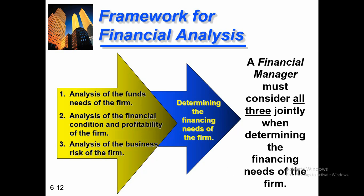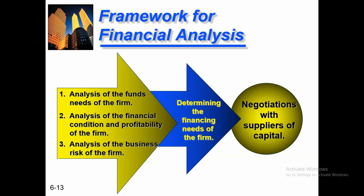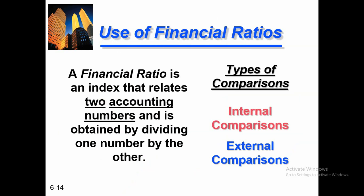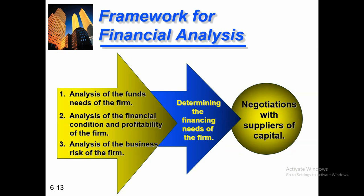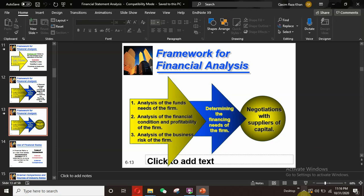Determining the financing needs of the firm: a financial manager must consider all three analyses jointly when determining the financing needs of the firm. Top management needs to consider all these factors together to determine the total funds required. Regarding negotiation with suppliers of capital — the two basic types are debt financing and equity financing — you need to negotiate with them when you need more funds, such as when a good investment opportunity arises. This concludes part one on financial statement analysis. The use of financial ratios will be covered in part two. Thank you so much for listening.